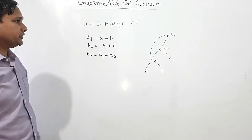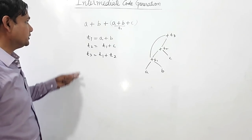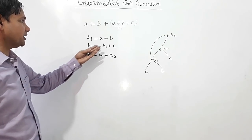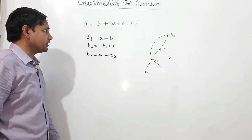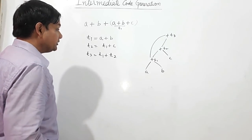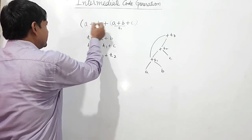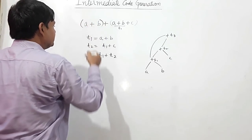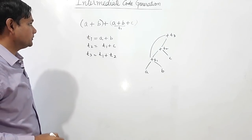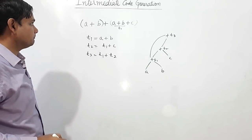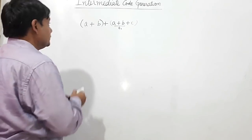So this is the directed acyclic graph for a plus b plus, in bracket, a plus b plus c. We can see the same result will be for this expression also. We shall see what will happen for this expression.